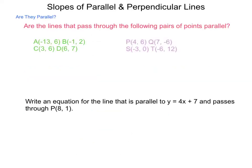Are the lines that pass through the following pairs of points parallel? We have the line that would pass through AB with points A(-13, 6) and B(-1, 2). And then CD with points at C(3, 6) and D(6, 7).